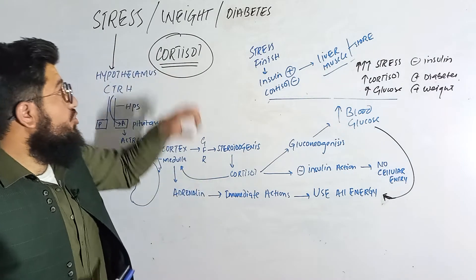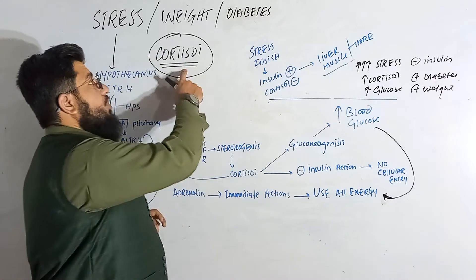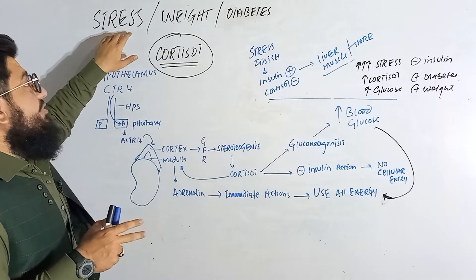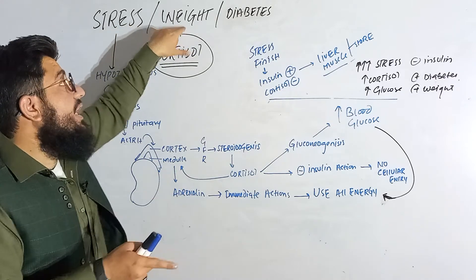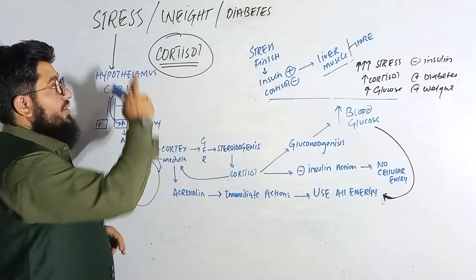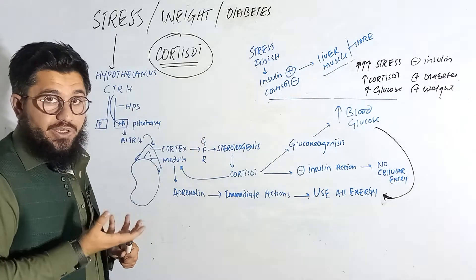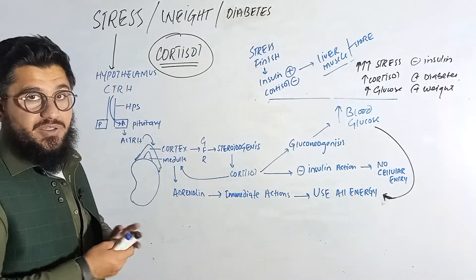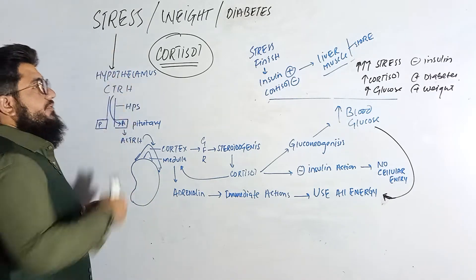Our point of discussion today is cortisol. If we get the understanding of cortisol, we will be able to understand how stress is responsible for causing weight gain and diabetes. So let's cover what cortisol is, the way it is synthesized, and the way it controls these two mechanisms in the human body.